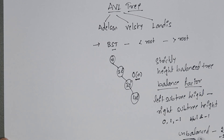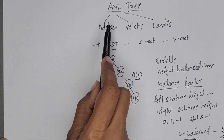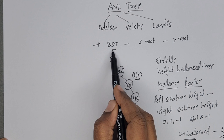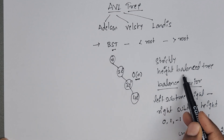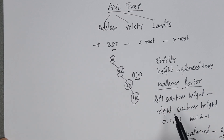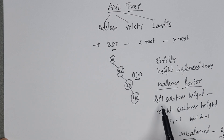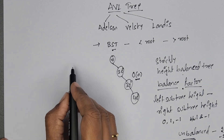If the tree is unbalanced, we have to balance it using rotations. So AVL tree is also a binary search tree and it is a strictly height balanced tree. For every node, we have to calculate the balance factor: left subtree height minus right subtree height.